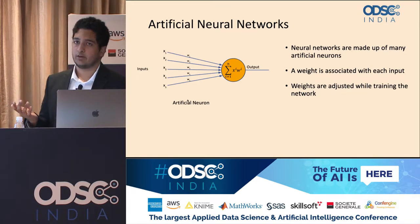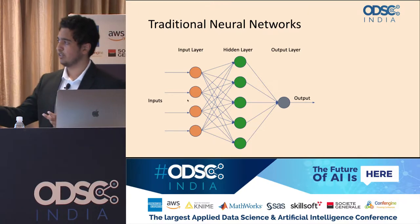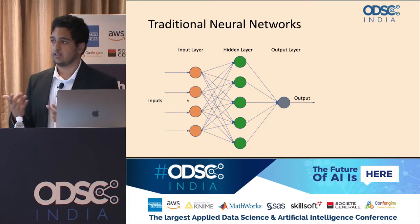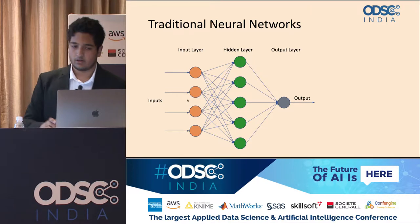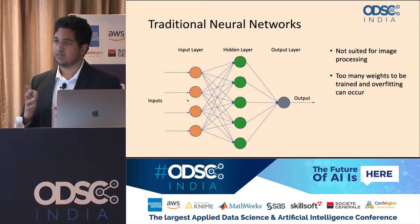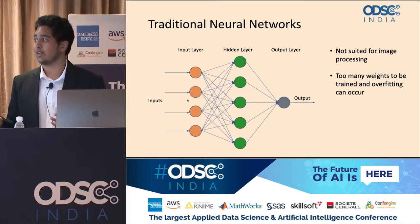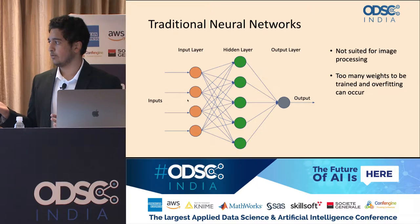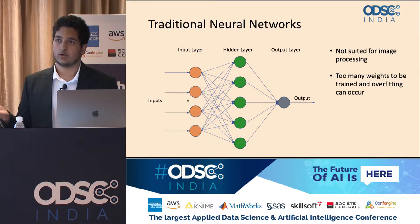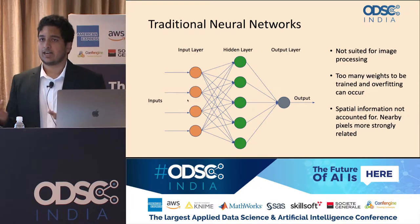This artificial neural network approach has shown a lot of promise in many datasets. However, when we get to image datasets, it's a different issue. Traditional neural nets have input layers, hidden layers, and an output layer that makes a prediction. The problem is they're not suited for image processing: images have a lot of pixels, creating many weights, which is computationally expensive and prone to overfitting. Most importantly, the spatial information of an image isn't accounted for by an artificial neural net.